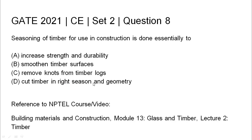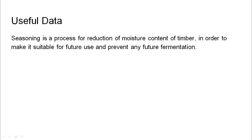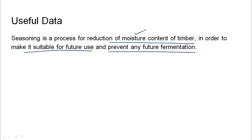Cut timber in the right season and geometry. Coming to the useful data: seasoning is a process for reduction of moisture content of timber in order to make it suitable for future use and prevent any future fermentation. So the primary objective of seasoning is to reduce the moisture content of timber.